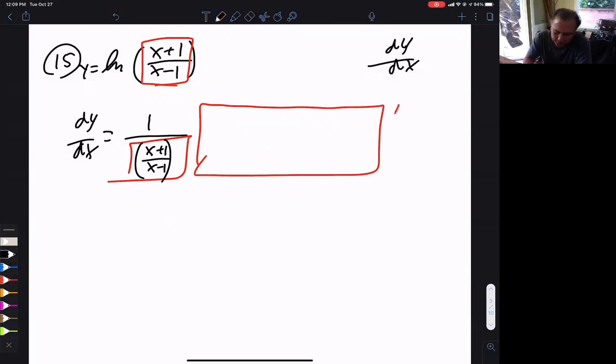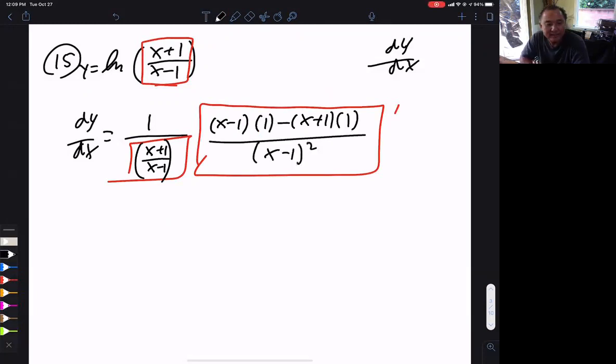How do we do that? Low. Whoops. That's not low. Low d high minus high d low all over low squared. You're going to like the second way so much better. You will, you will, you will.